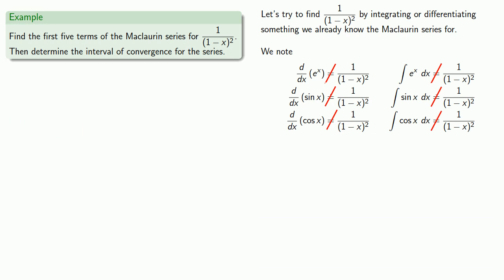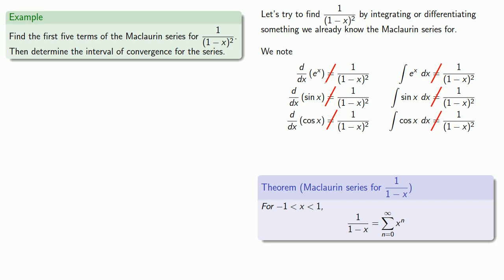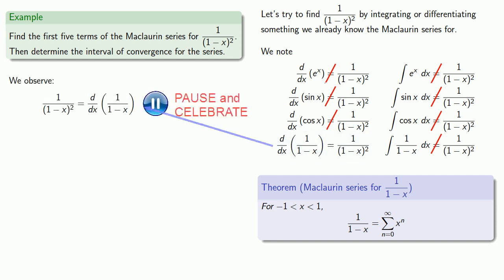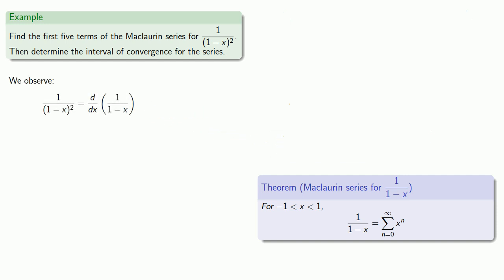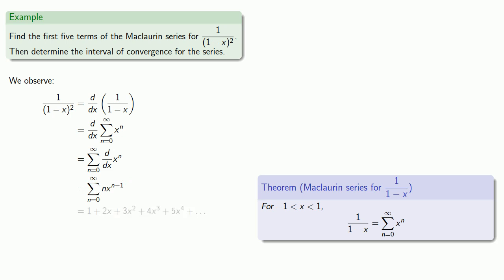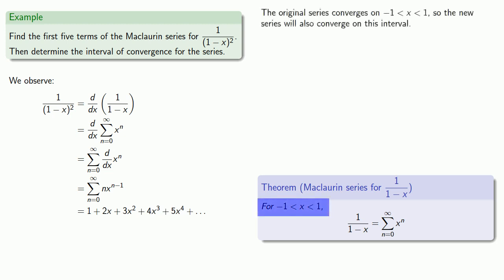Before we do anything drastic, let's try that last Maclaurin series for 1 over 1 minus x. Finally, we have success: the derivative of 1 over 1 minus x is indeed 1 over 1 minus x squared. So 1 over 1 minus x squared is the derivative of 1 over 1 minus x. We can replace 1 over 1 minus x with its power series, then differentiate the power series term-wise. We'll also write down the first couple of terms. The original series converges on the interval minus 1 to 1, so the new series will also converge on this interval.